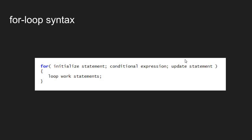Once we do the update statement, we come back and check to see if the conditional expression is still true. We keep doing this loop — checking the conditional expression, and if it's true, doing the work, then doing the update statement and checking again — until the conditional expression is false. Once it's false, we exit the loop and move on with our code.